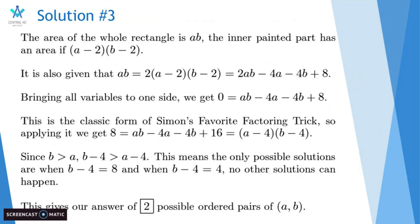We add 8 to both sides, because minus 4 times minus 4 is 16, and then it becomes a classic form of Simon's favorite factoring trick. So 8 equals ab minus 4a minus 4b plus 16, equal to a minus 4 times b minus 4.